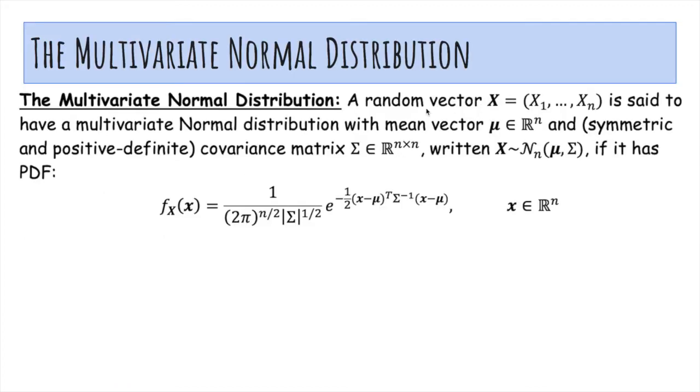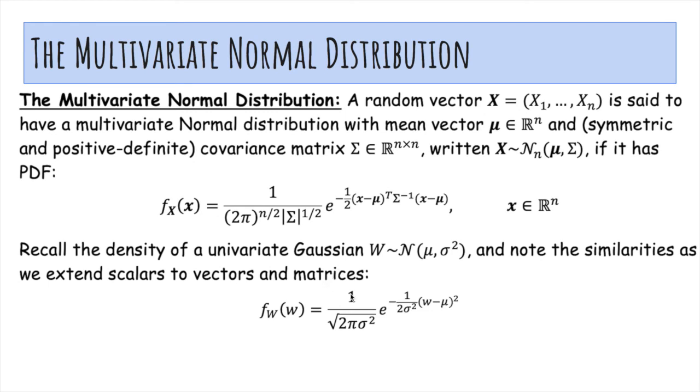So we'll say that a random vector X has a multivariate normal distribution with mean vector mu and covariance matrix sigma, and notice the n here is for the number of dimensions, if it has this PDF. And this is kind of intimidating, but it actually looks very similar to the univariate Gaussian PDF, except with matrix operations like transpose and matrix multiplication here instead.